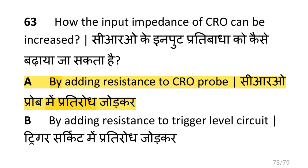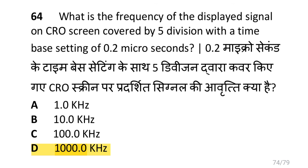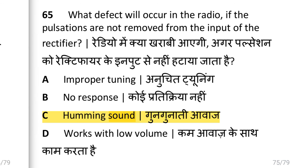How can the input impedance of a CRO be increased? i.e. by adding resistance to the CRO probe. What is the frequency of the displayed signal on a CRO screen covering 5 divisions with a time-base setting of 0.2 microseconds? i.e. 1000 kHz.